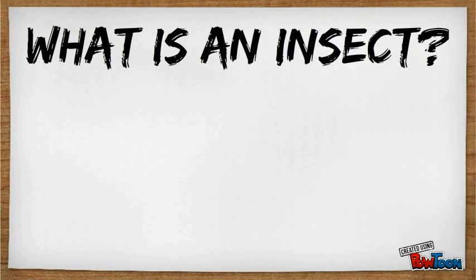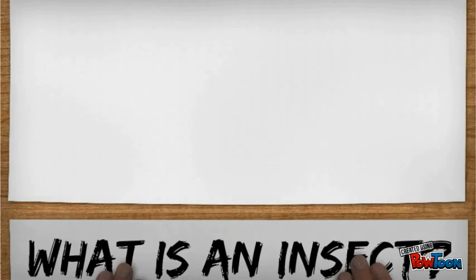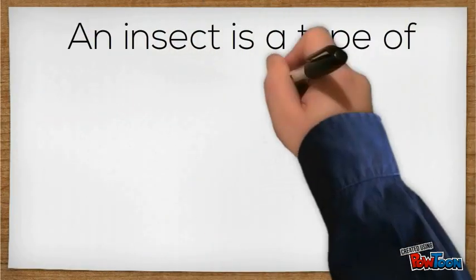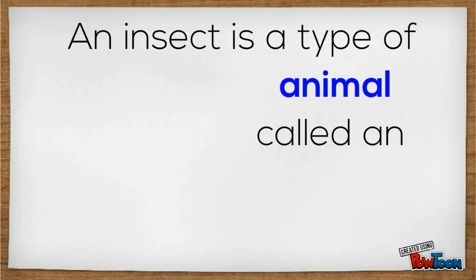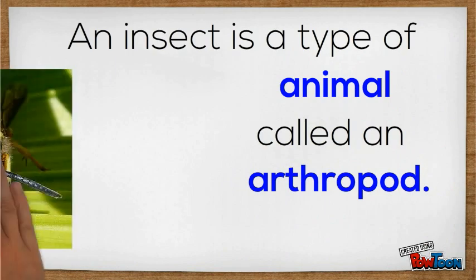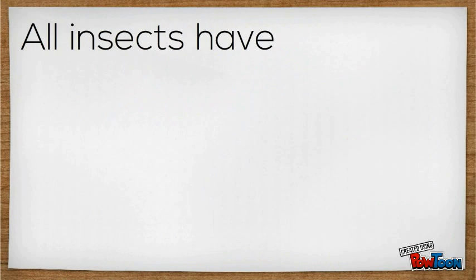What is an insect? An insect is a type of animal called an arthropod. All insects have six legs.